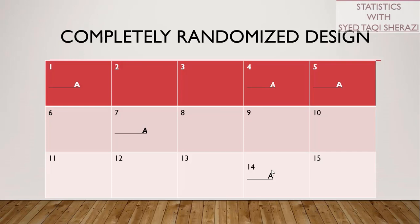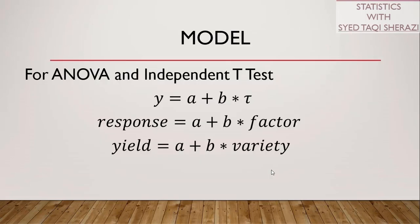Here is the model used for the analysis of CRD: Y_ij = mu + tau_i + epsilon_ij, where Y is our response and tau is our factor — the categorical variable, meaning the qualitative variable where the names of treatments are placed. For example, yield is the response and variety is our factor, where we write the names of the varieties.